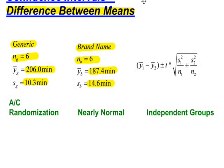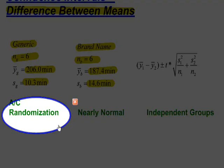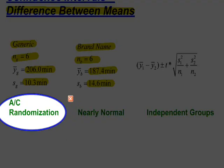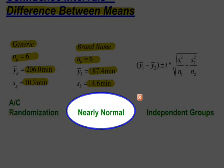Before I go any further, though, I should always check my assumptions and conditions. So let's start off like this, randomization. I am going to assume that the batteries were randomly selected.